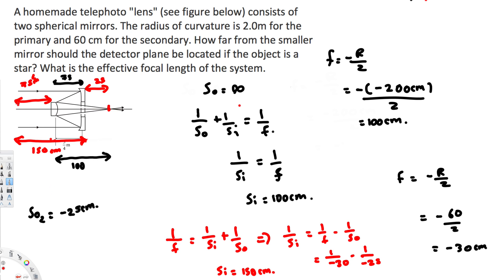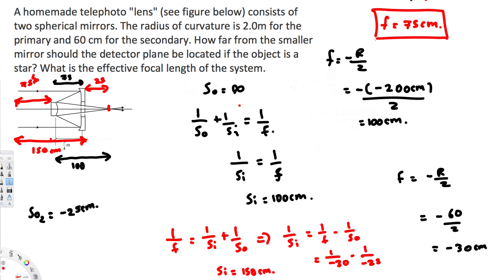Since the final image forms 75 centimeters from the primary mirror, the effective focal length of the system is 75 centimeters. That's the final answer.